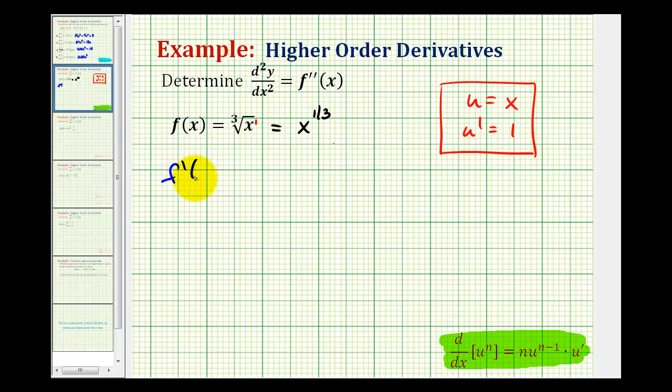For the first derivative, we're going to multiply by the current exponent, so we'll have one third x to the, and then we'll subtract one to get the new exponent. So this would be one third times x to the negative two thirds.